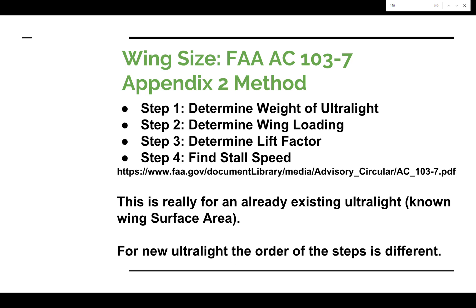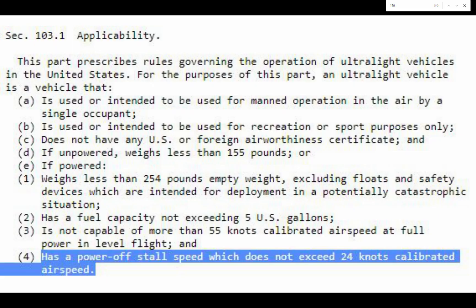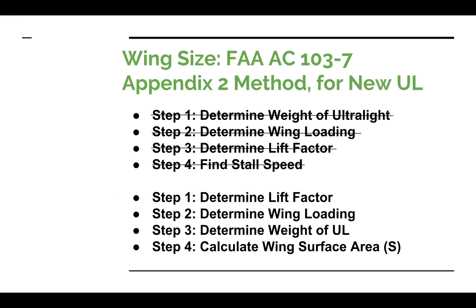Since we are designing an ultralight, we don't yet know what the surface area is going to be. So we have to switch these steps around and assume a maximum stall speed of 24 knots, which is from the Part 103 regulations. Knowing that, we can work backwards to the surface area. Our revised order: first, determine the lift factor using the Appendix 2 method; then, using their chart with the lift factor and our expected stall speed of 24 knots, determine the wing loading; then calculate the weight of the ultralight; and finally, with wing loading and weight, calculate the surface area.